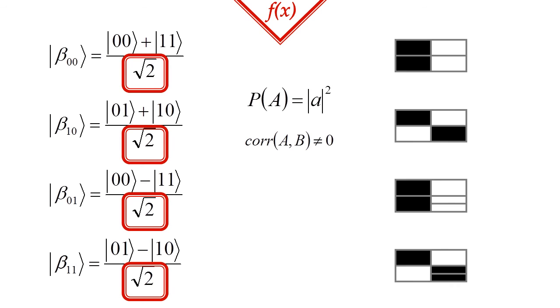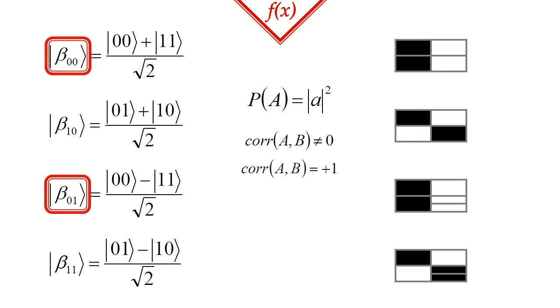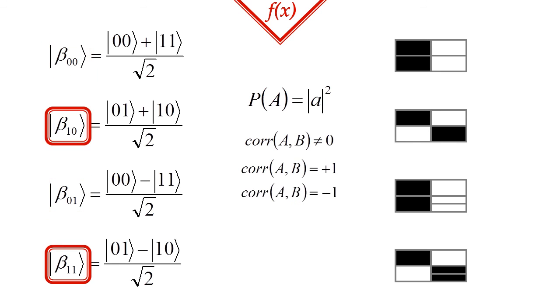Remember, the probability is the absolute value square of the scalar coefficients. This means, that although the qubits behave like a flipped coin individually, together they are like a pair of magically linked twins. In some bell states, the outcome is 100% correlated. In others, it's 100% anti-correlated.